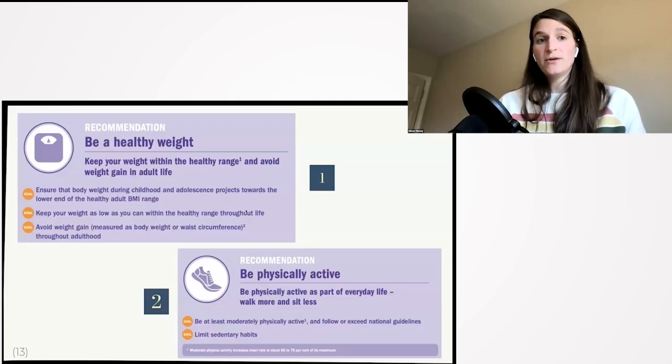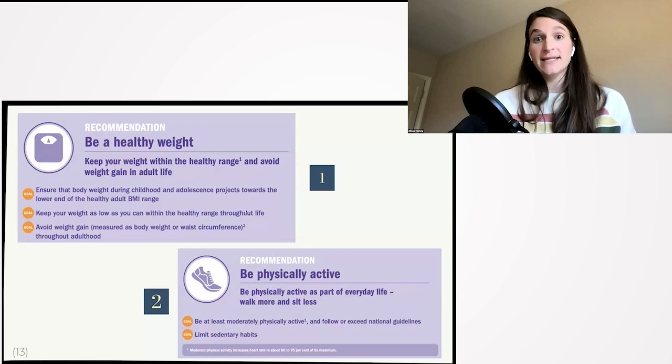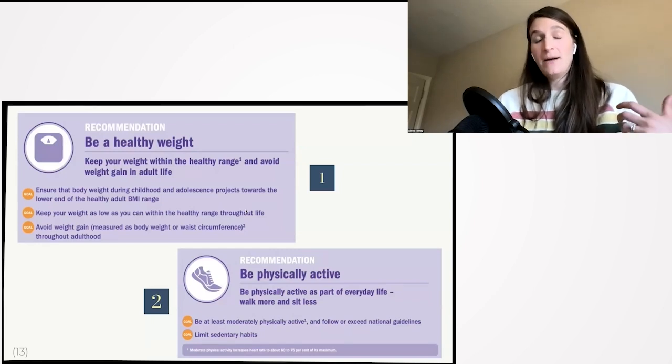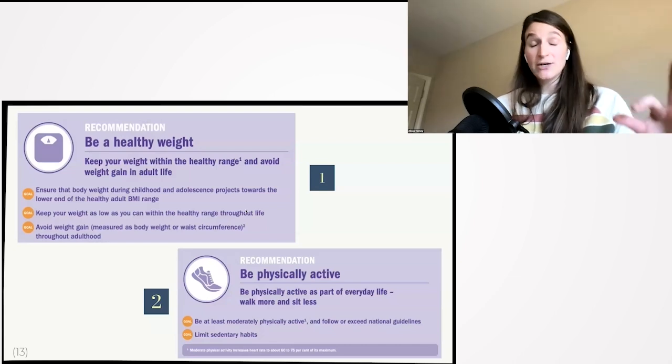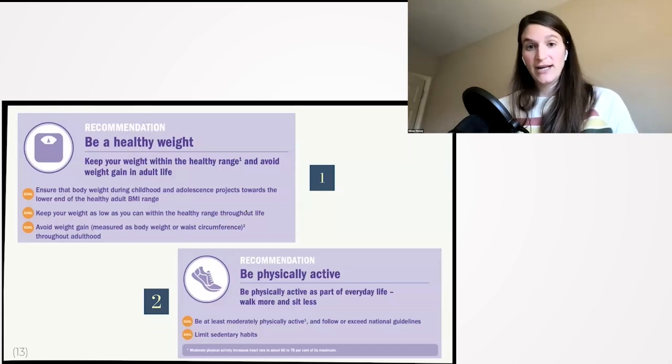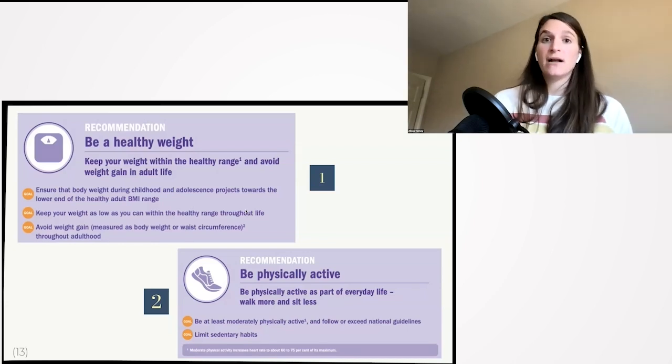So first and foremost, we know that we want to be at a healthy weight because unfortunately, being overweight or obese increases that stress on the body, decreases apoptosis and proliferation, increases inflammation, etc. So the recommendation is to keep your weight within a healthy range and avoid weight gain in adult life. And the recommendation is actually to be as lean as possible without being underweight because underweight can also be very detrimental to our health.